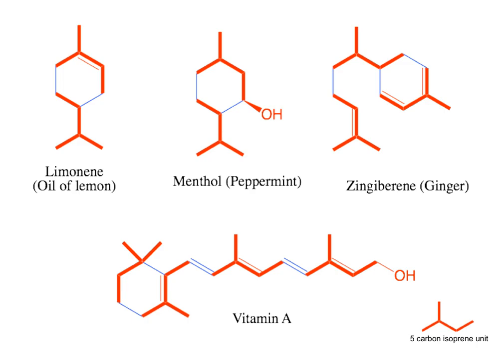So you can see, for example, with the oil of lemon, we've got two new bonds that are created between two isoprene units that are used to assemble the ring structure. The same with menthol — we have the two bonds that are created here between the two units of isoprene that build up the ring structure. These are called diterpenes because they're composed of two of those five-carbon isoprene units.